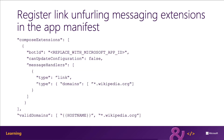The first step is to register your link unfurling messaging extension in your Microsoft Teams app manifest file. You do this by adding an entry to the message handlers property on the compose extensions property. The type property must be set to link, and the value property must contain a domains collection of domains that the link message handler is going to watch for. If a link is added to the message that matches a domain listed in this collection, the message handler will be invoked.